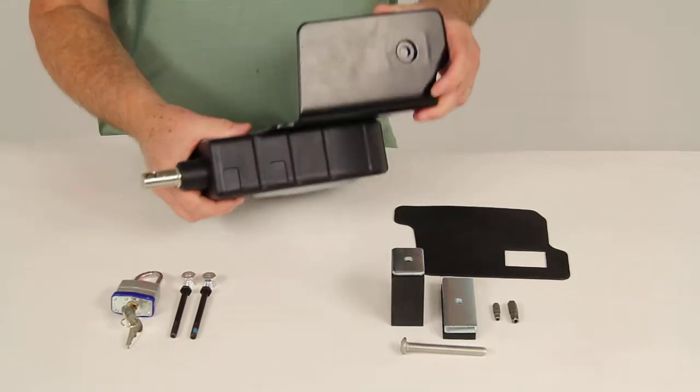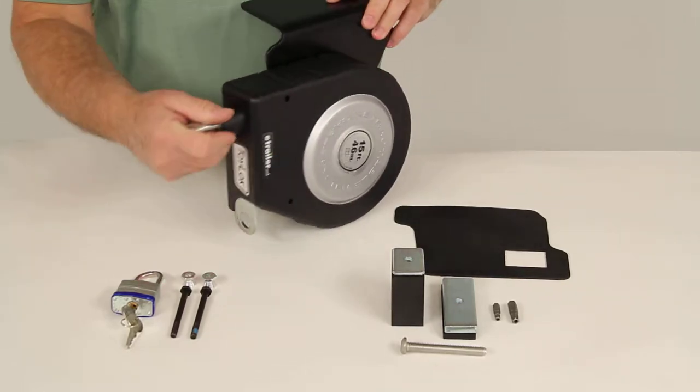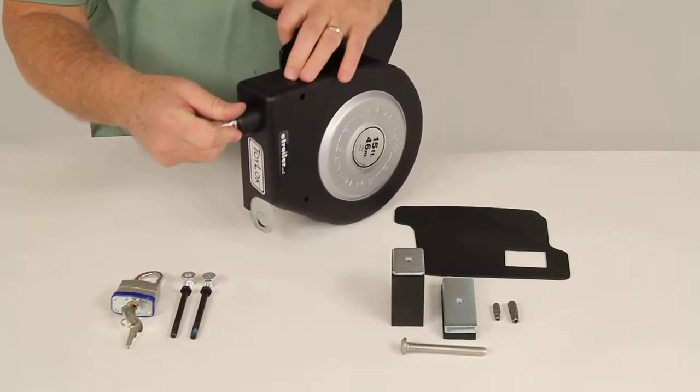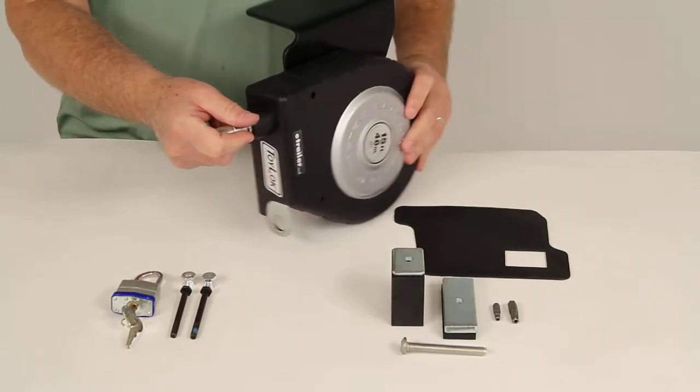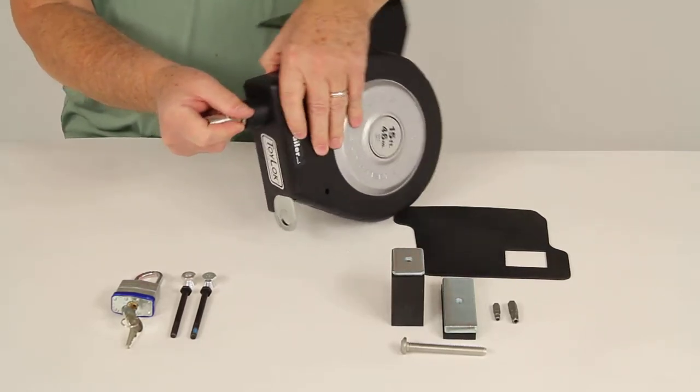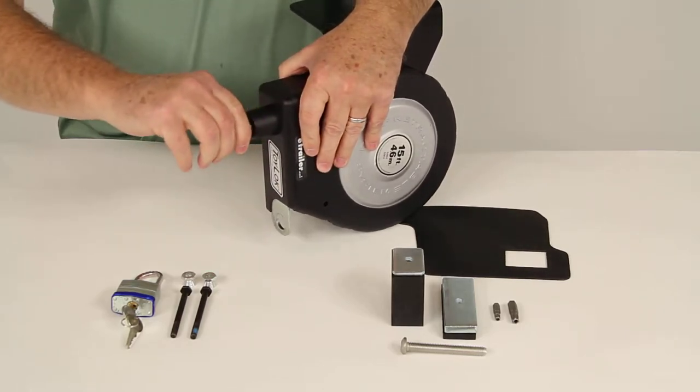So basically once this is installed in your stake bed, you can pull out the cable that you need. When you pull it out and start hearing a clicking noise, that's when you can let it go and it'll stay out at that length you pulled out.